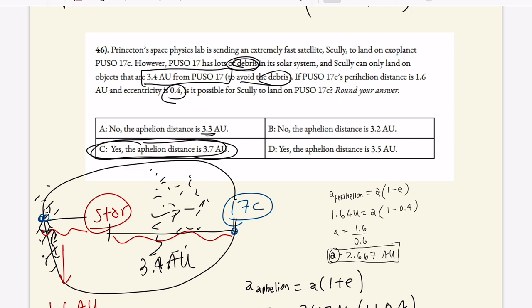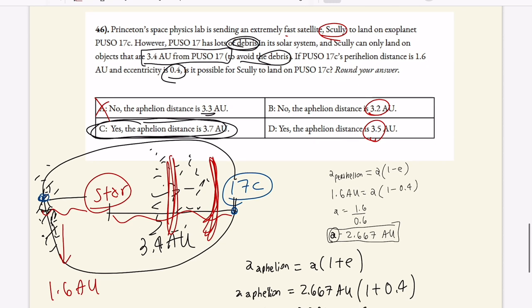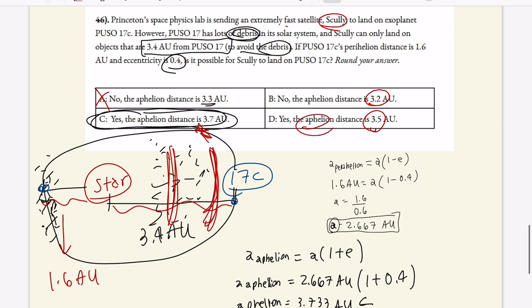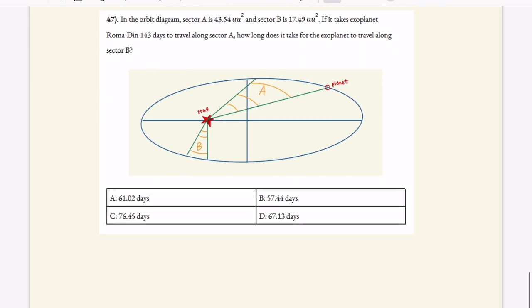So essentially, if we computed it to be 3.3 AU, well 3.3 AU would be inside this debris disk zone, we would be in this very dangerous area. So no, the rocket ship wouldn't be able to land. Same thing for 3.2 AU. If we were at 3.5 AU we would be a little safer, we'd be away from the debris, but the exoplanet isn't there. But that's not the aphelion distance. The aphelion distance is strictly given by this formula we have here. And when we do the calculation we find that it's 3.7 AU and that this Scully satellite will be safe.